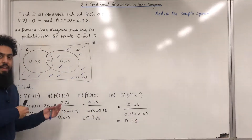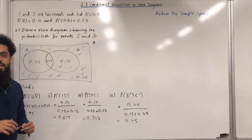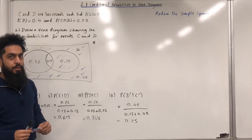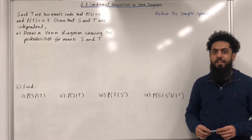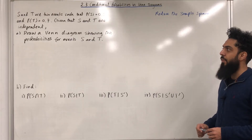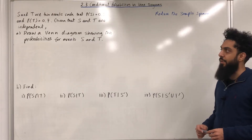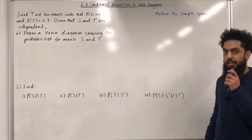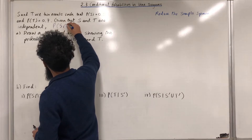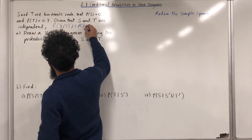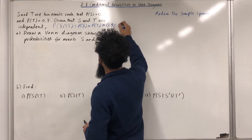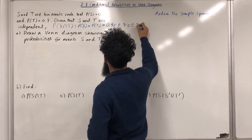That is how you find conditional probabilities in Venn diagrams — you simply use the reduce the sample space method. Here is another example. S and T are two events such that probability S is equal to 0.5 and probability T is equal to 0.7. Given that S and T are independent, probability S intersect T equals probability S multiplied by probability T, which is 0.5 multiplied by 0.7, giving 0.35.